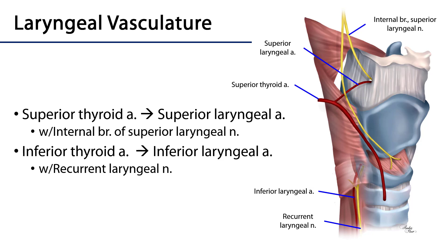There are two arteries serving the larynx: the superior laryngeal artery and the inferior laryngeal artery. That superior laryngeal artery is served by the superior thyroid artery. We can see that superior laryngeal artery branching from the superior thyroid before accompanying the internal branch of the superior laryngeal nerve through the hiatus in the thyrohyoid membrane. That superior thyroid artery is a branch of the external carotid artery.